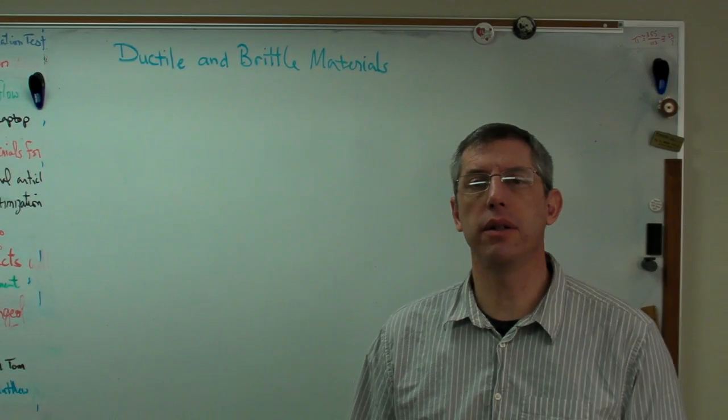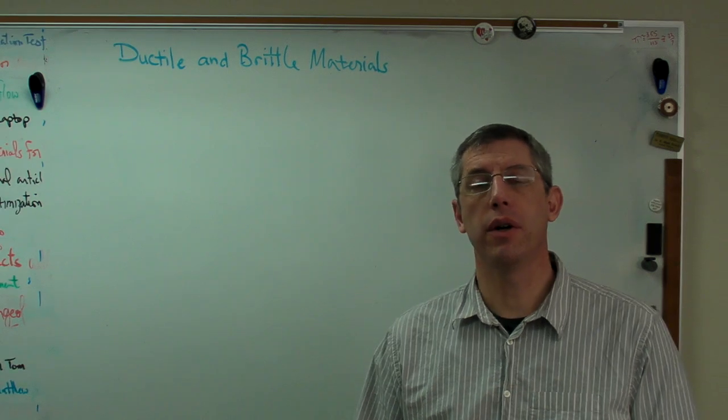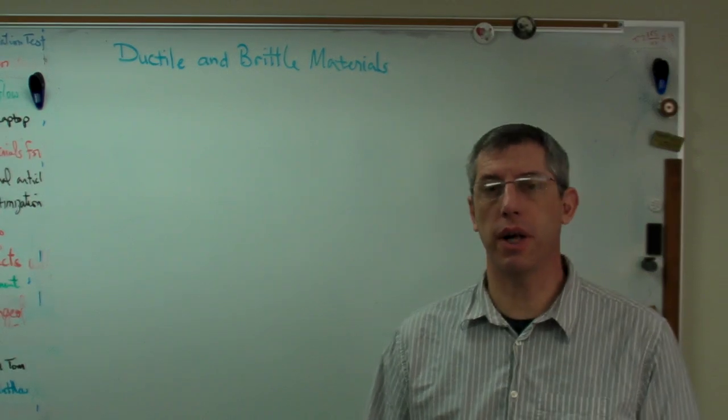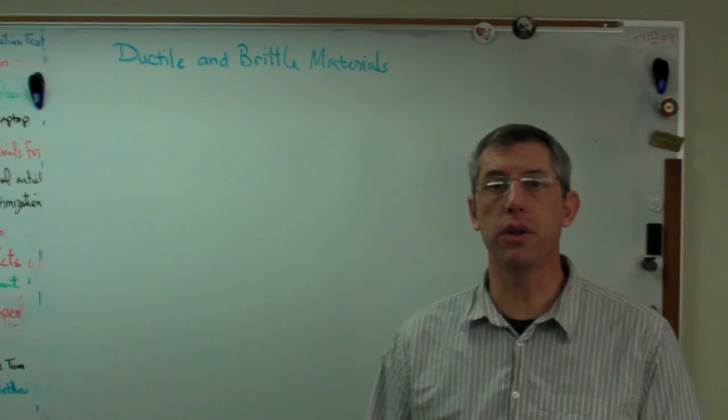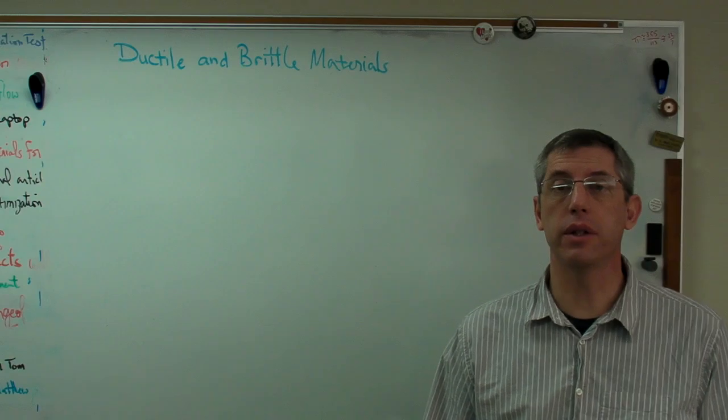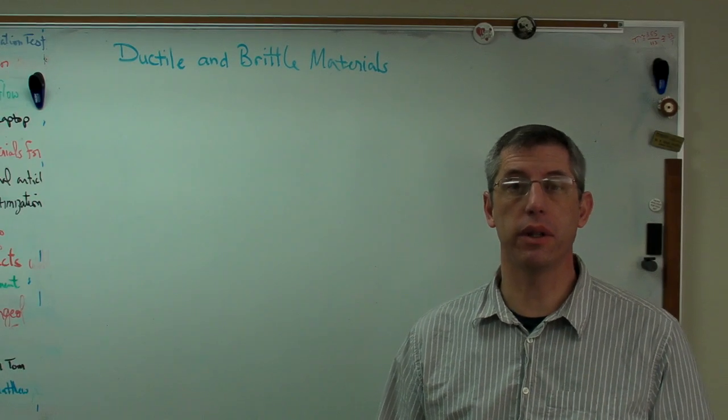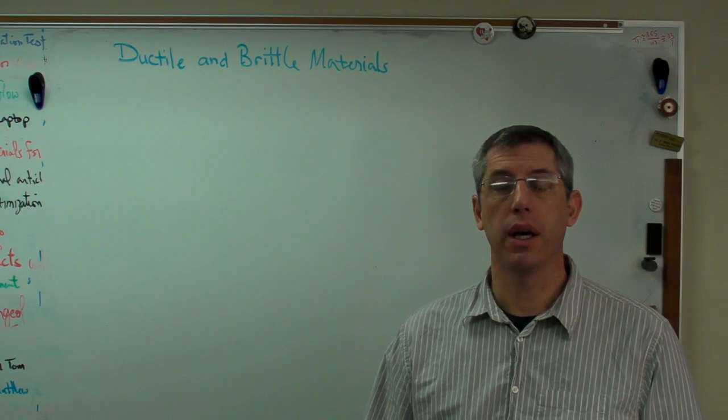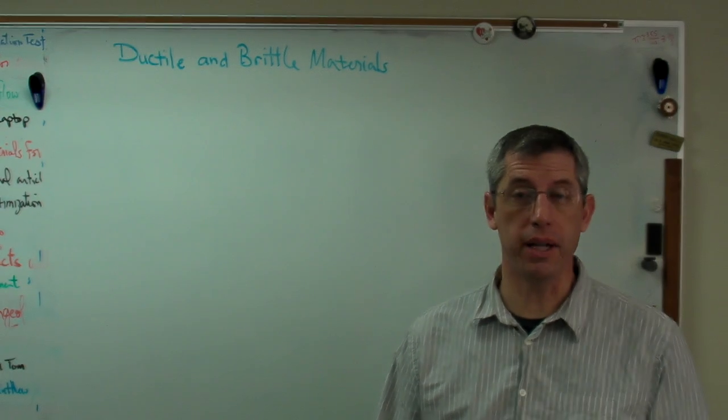Okay, let's talk a little bit about ductile and brittle materials. When you're designing structures there's lots of different materials you can use and lots of different ways to think about them. One of the most fundamental distinctions we make is whether a material is ductile or brittle. A ductile material is one that bends before it breaks and a brittle one is a material that doesn't.